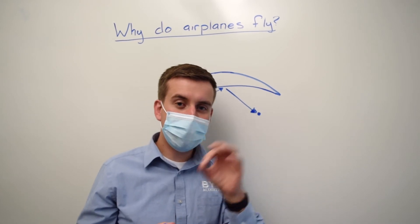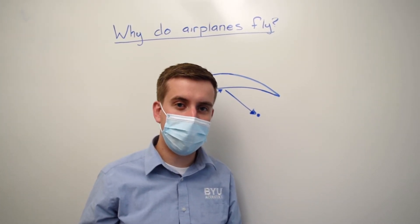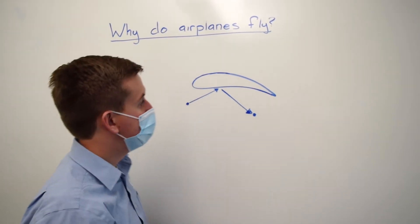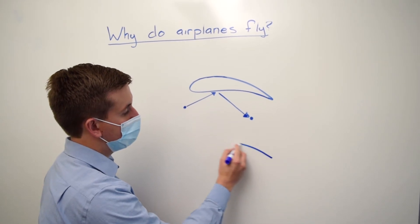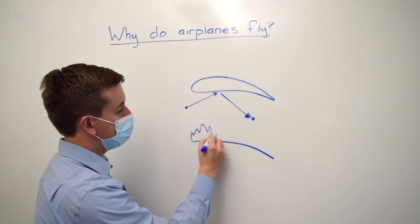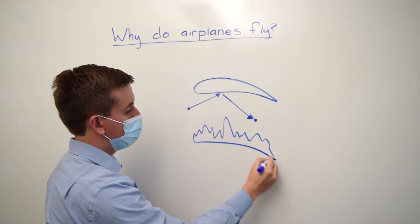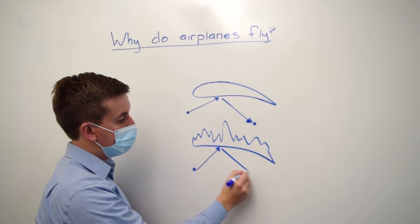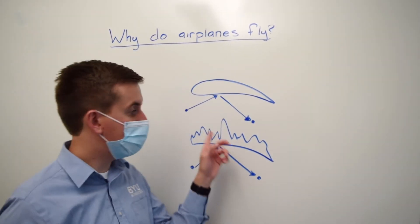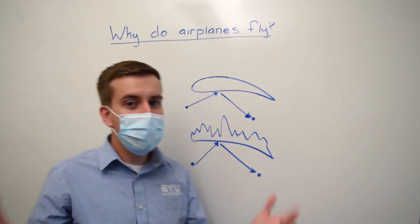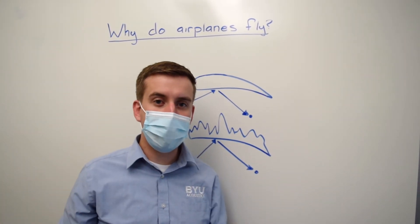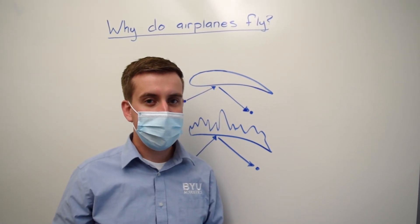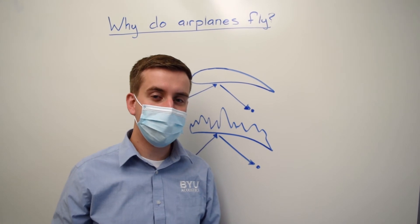This is actually better than the Equal Transit Time Theory — it's along the right path. However, it's also misleading. Because if you had an airfoil shaped like this, this theory predicts that it doesn't matter what the rest of the airfoil looks like. And if you made a wing that looked like that, it wouldn't do so good. So this theory is also debunked.